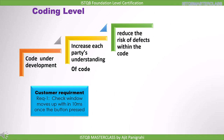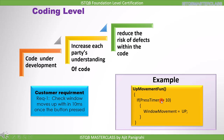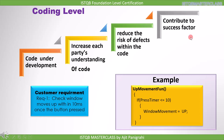Let's see an example to understand how reviewing code can find defects. Suppose the requirement is: the check window moves up within 10 milliseconds once the button is pressed. For this requirement the developer has written some code. The function looks right, but the developer has written: if button is pressed for 10 milliseconds or less, then the window will move up. The requirement was for the window to move up within 10 milliseconds, not at 10 milliseconds. The developer introduced an 'equal to' sign which changes the result — the window might not move up unless exactly 10 milliseconds have passed. This is how performing testing at the coding level can reveal mistakes and contribute to the success of the whole project.